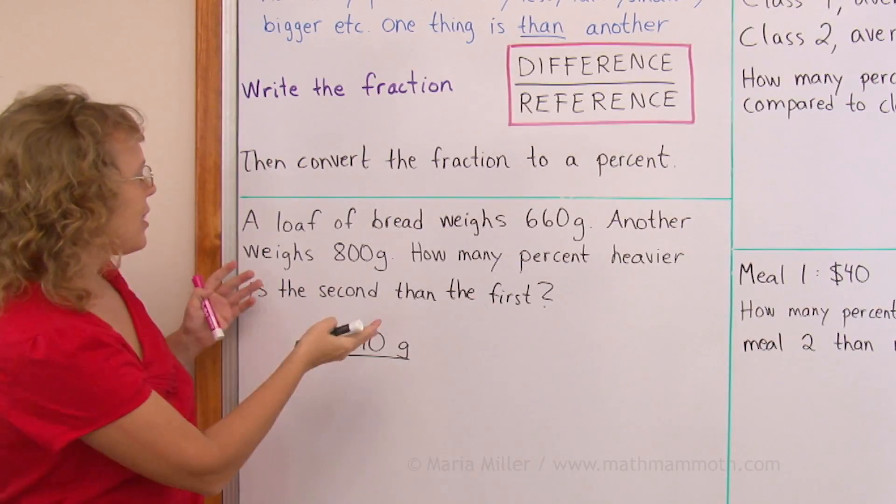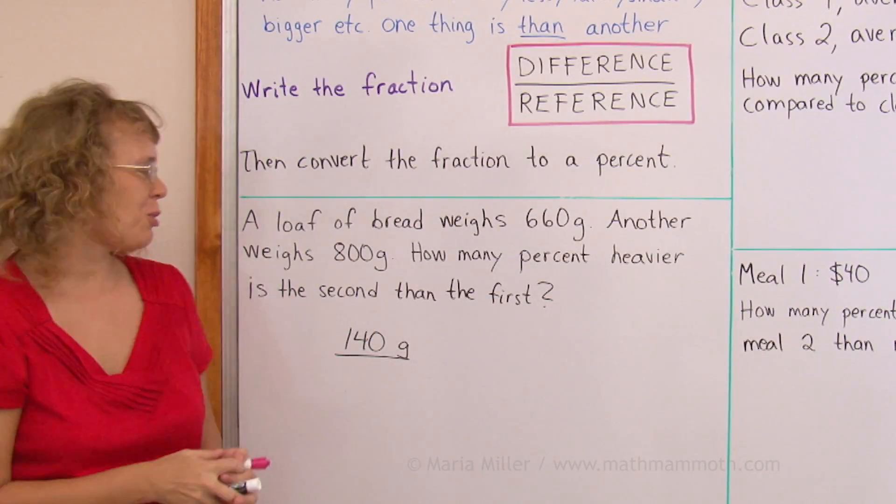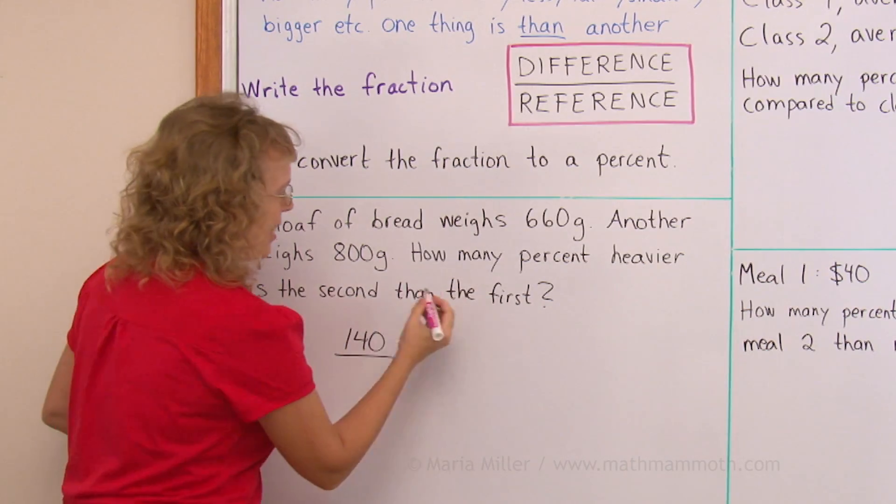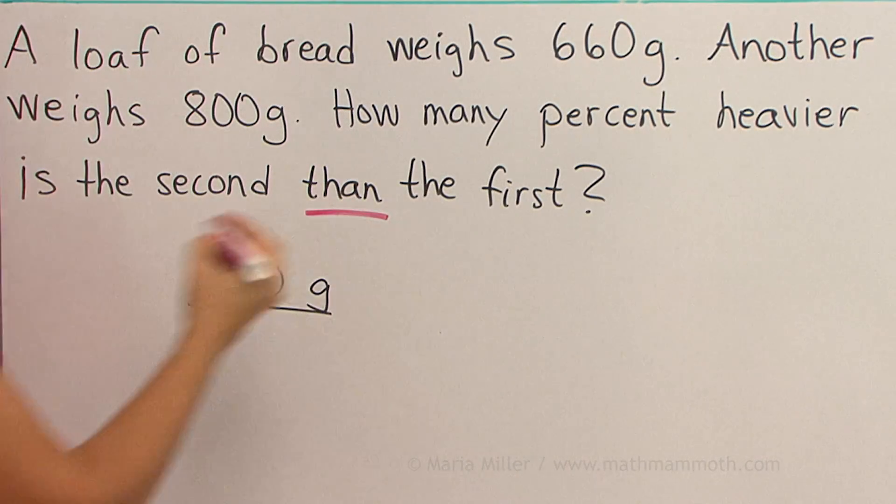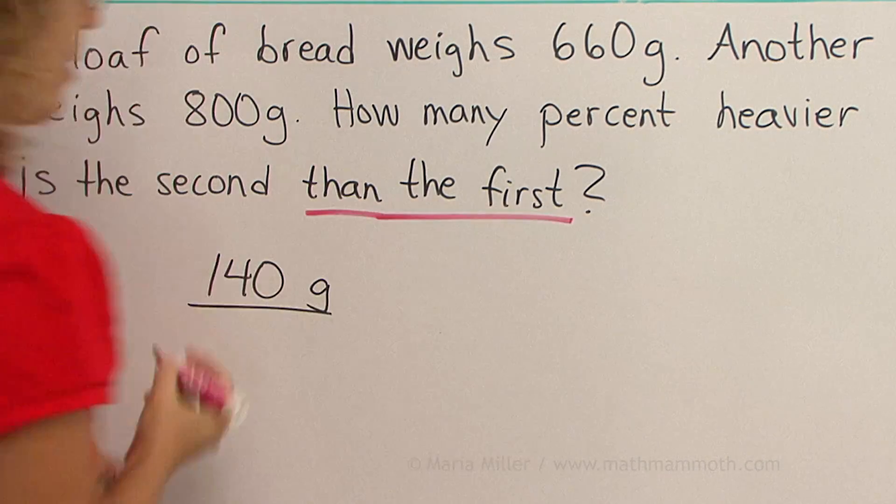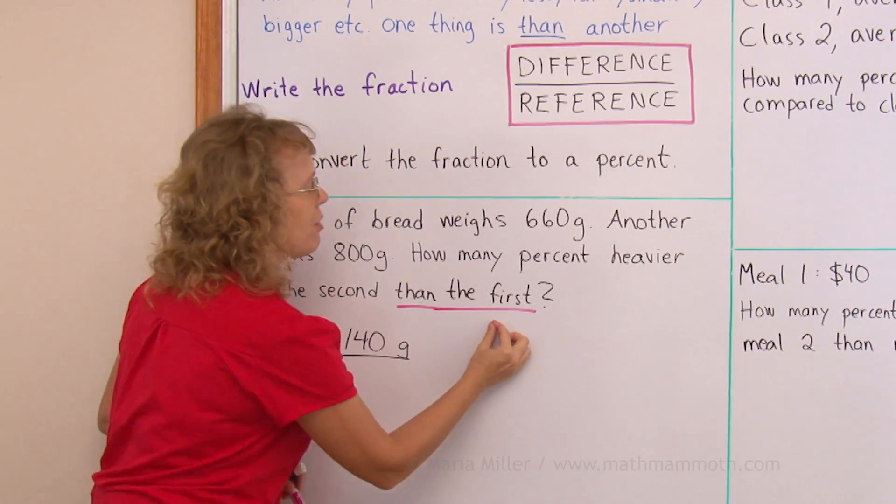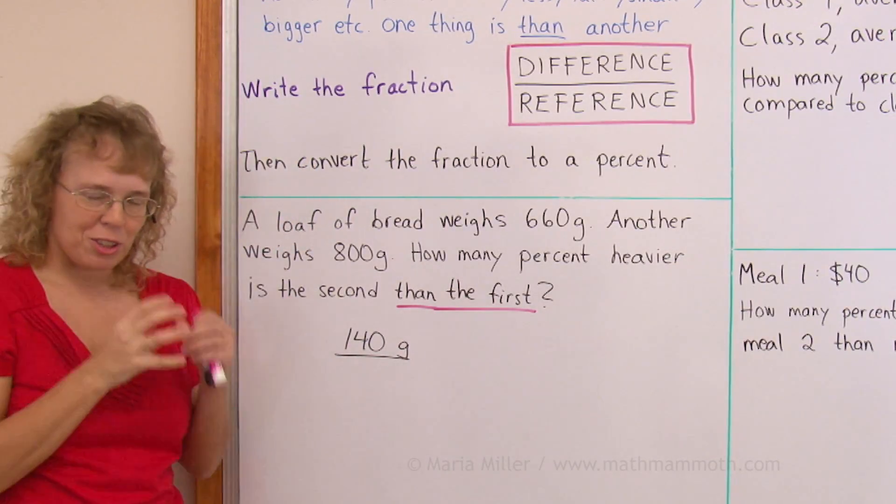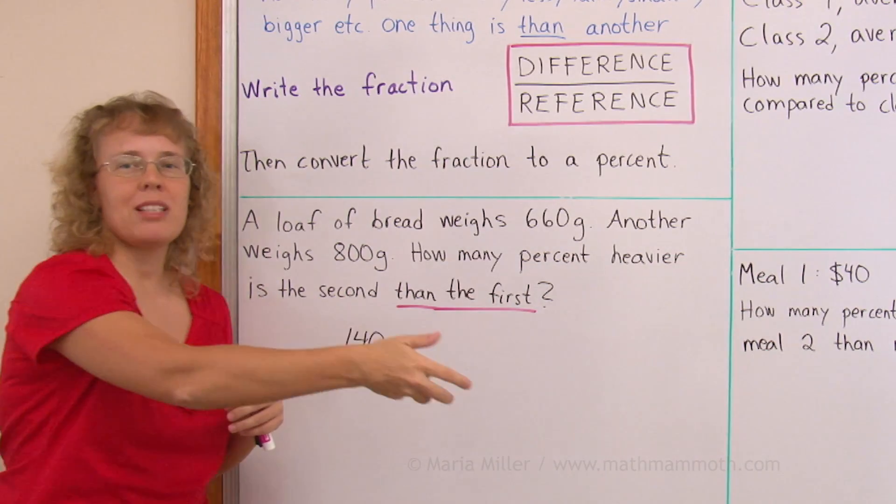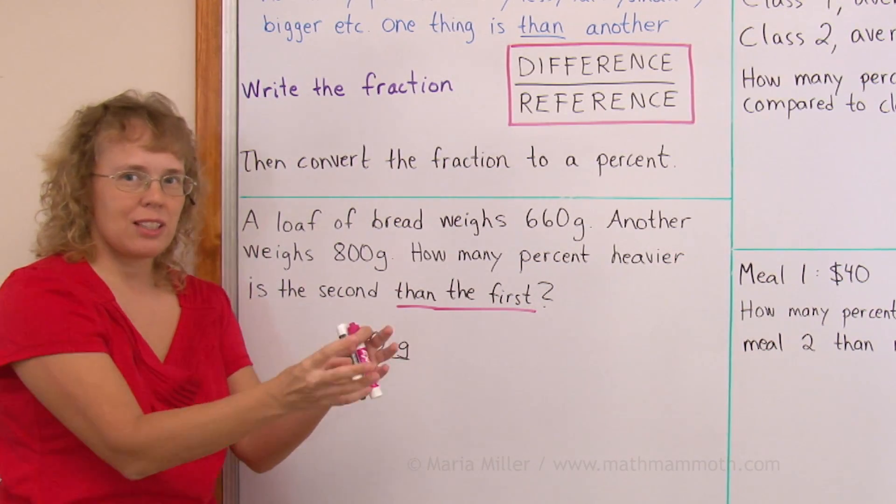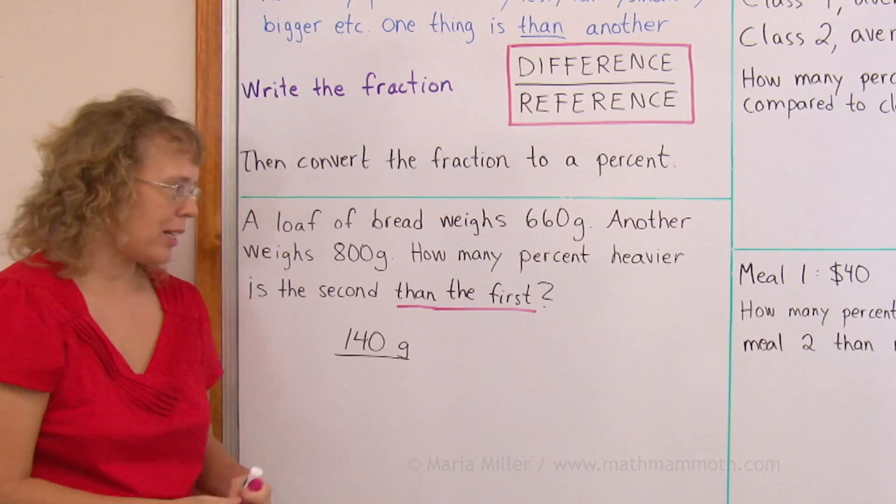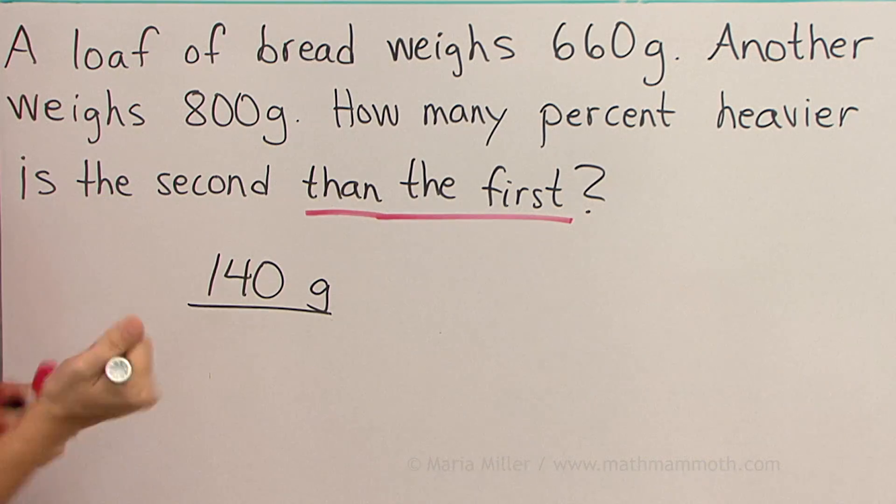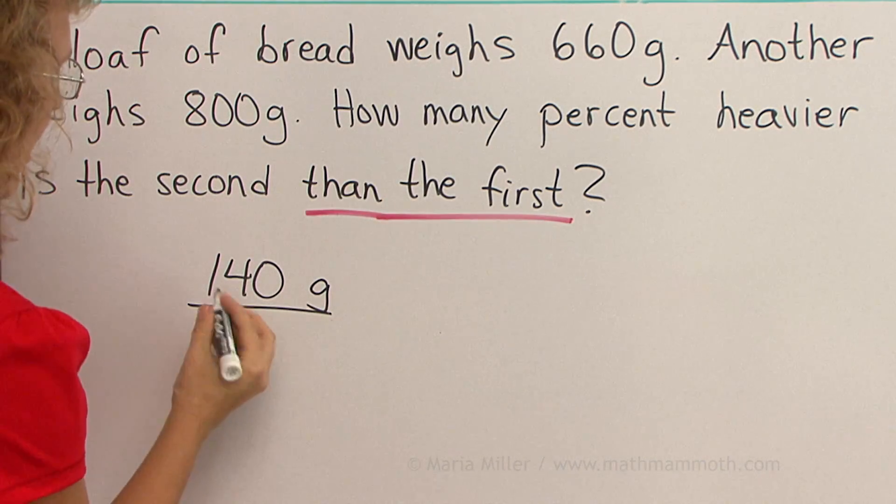And then over here we put the reference weight. We need to figure out which one of these breads is the reference bread, so to speak. And that would usually be mentioned after the word 'than' over here. We are comparing to the first bread. You have your first bread, and then the second bread comes along. And you are looking at the second bread and comparing that to the first bread. So the first bread is 660 grams.